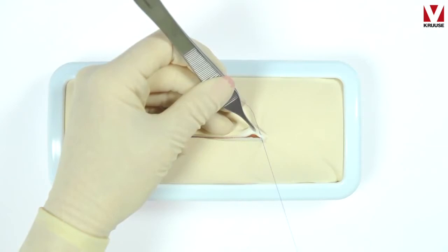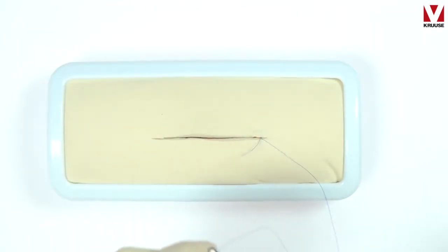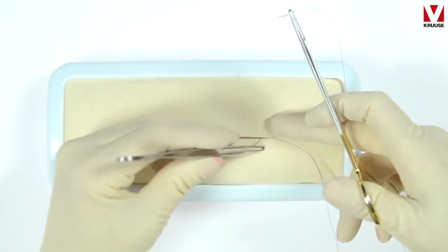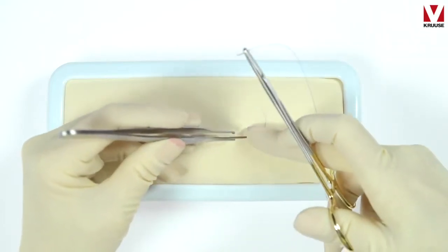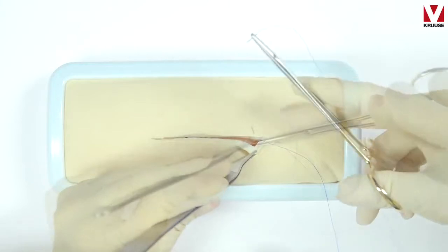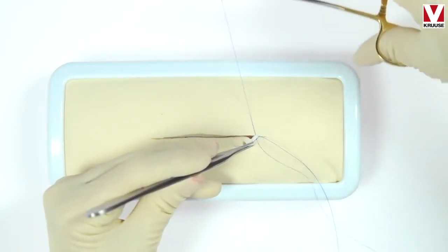Here you see I start superficial and then I go deep, take a bite of the subcuticular layer, and then I go superficial to deep once again on the opposite side of the incision.